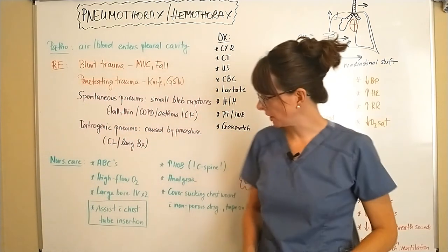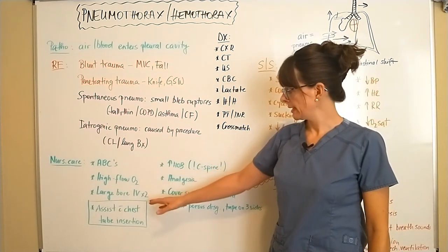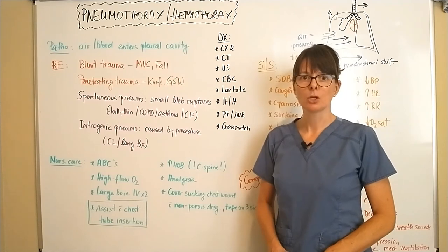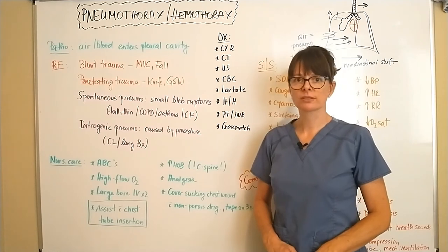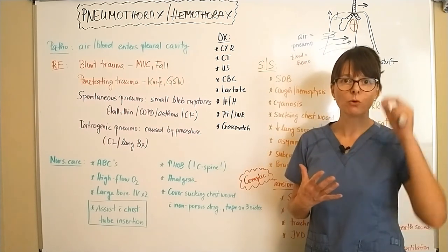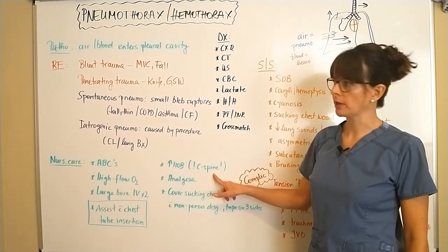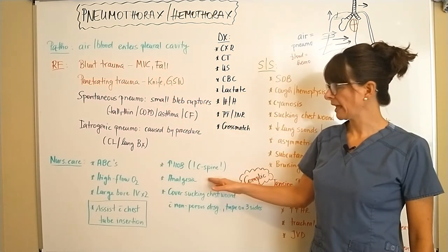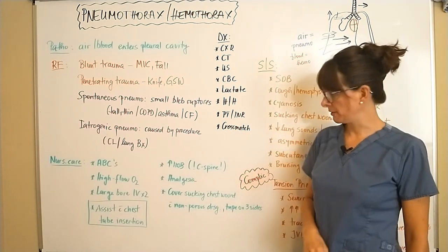In terms of nursing care, always ensure ABCs first, place the patient on high-flow O2, and establish two large-bore IVs — at least an 18 gauge in each extremity — to prepare for fluid resuscitation, blood administration, and medications. Elevate the head of the bed to facilitate better breathing; however, if there is concern for a cervical spine injury from a fall or motor vehicle crash, be very careful about elevating the head of the bed to avoid worsening any cervical spine injury.